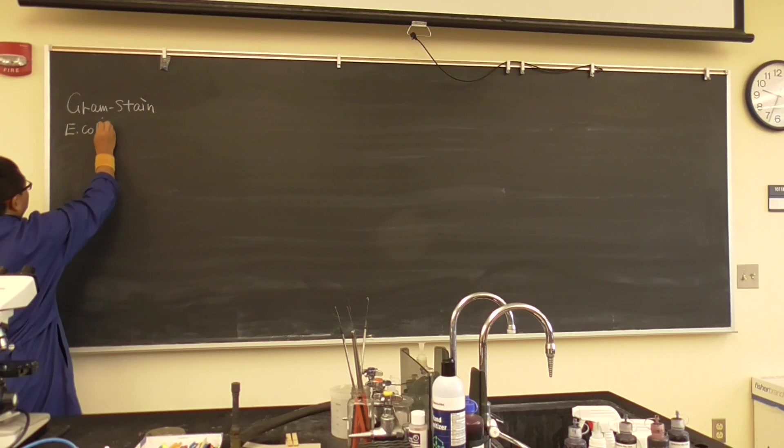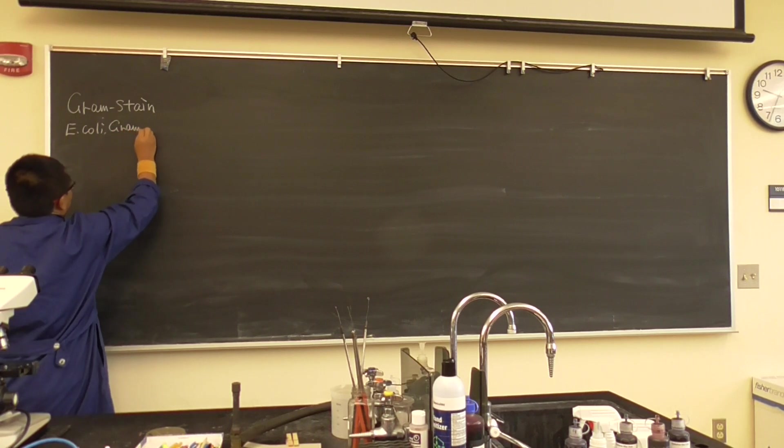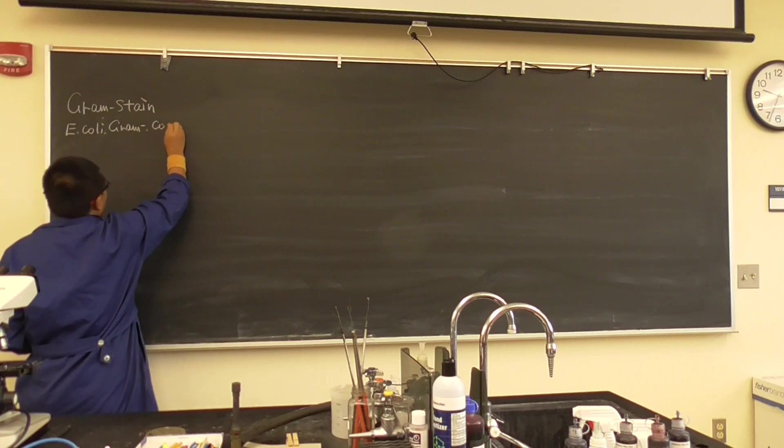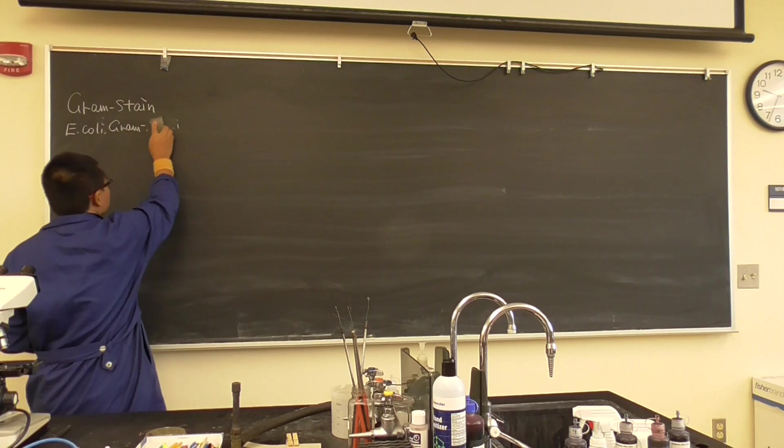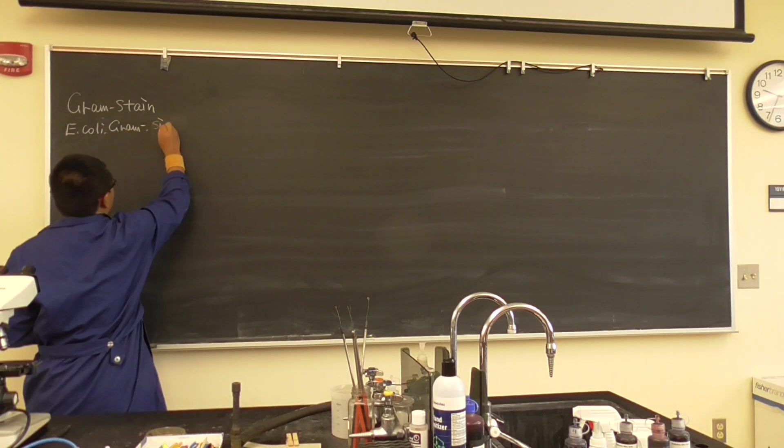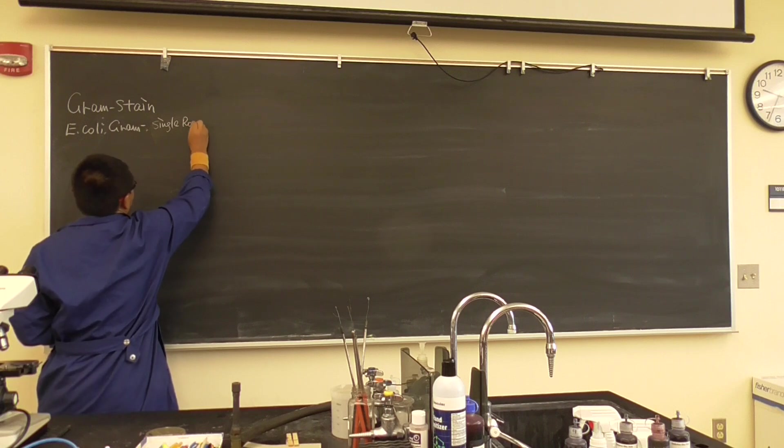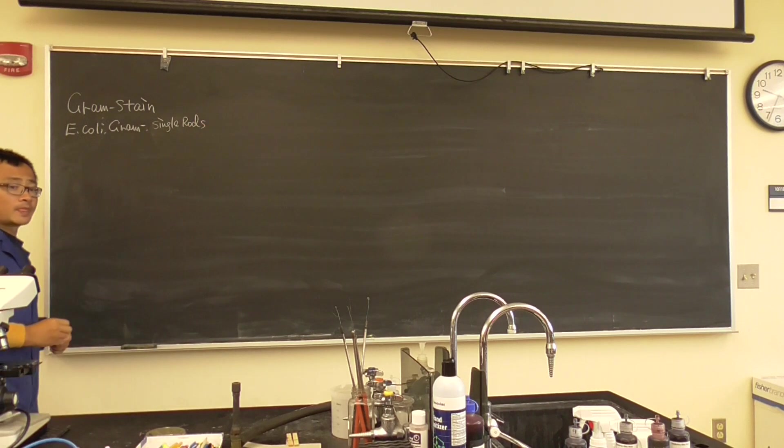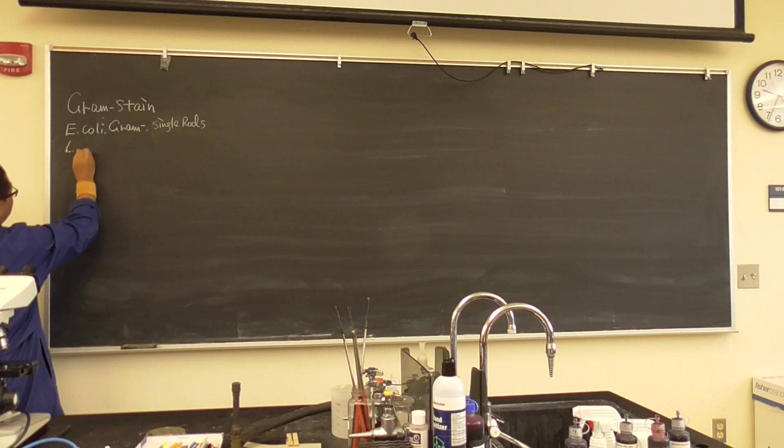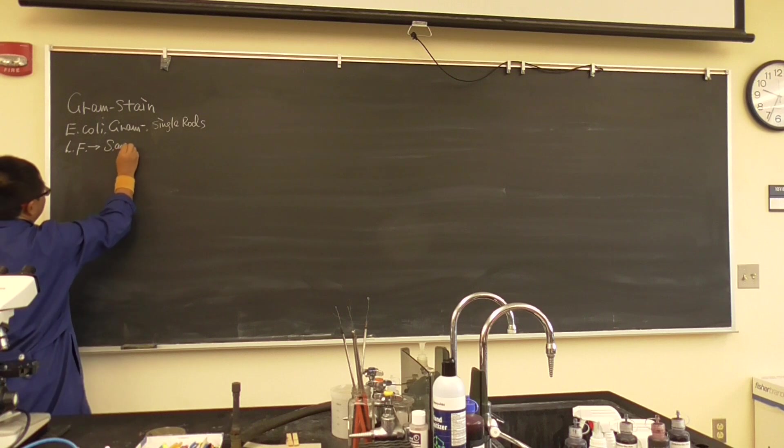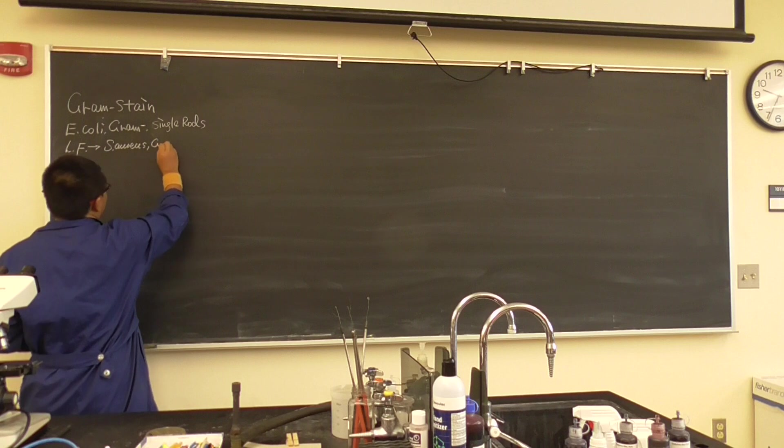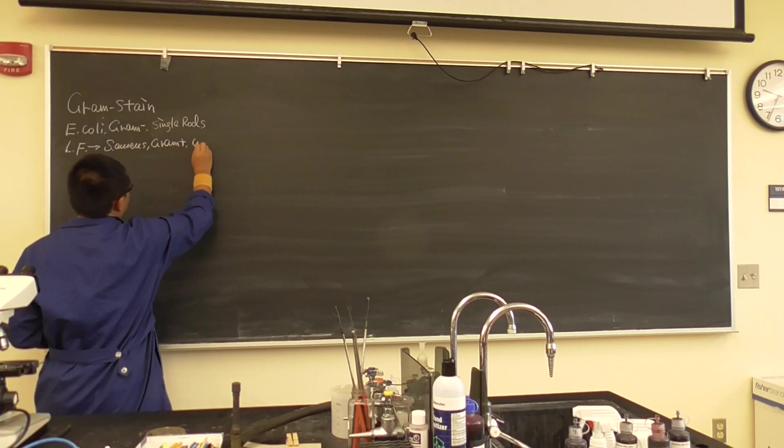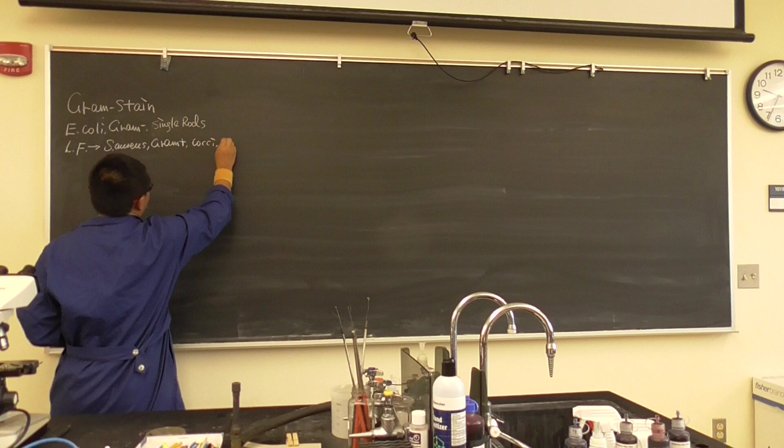E. coli should be gram negative, rods - sorry not cocci, rods - and we will say single rods arrangement. And you also have so-called lactobacillus fermenti, but I say it is staphylococcus aureus. We got some cross-contamination there, so it is gram positive cocci.